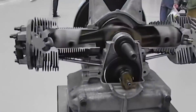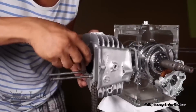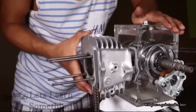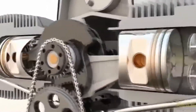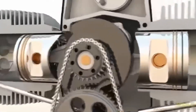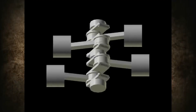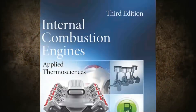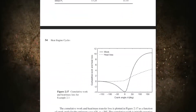Let's compare opposed engines and 180-degree V engines. I'll try to back up my arguments as much as possible, find suitable visualizations, and for those who have doubts, I'll include links in the description to the sources of the information used.